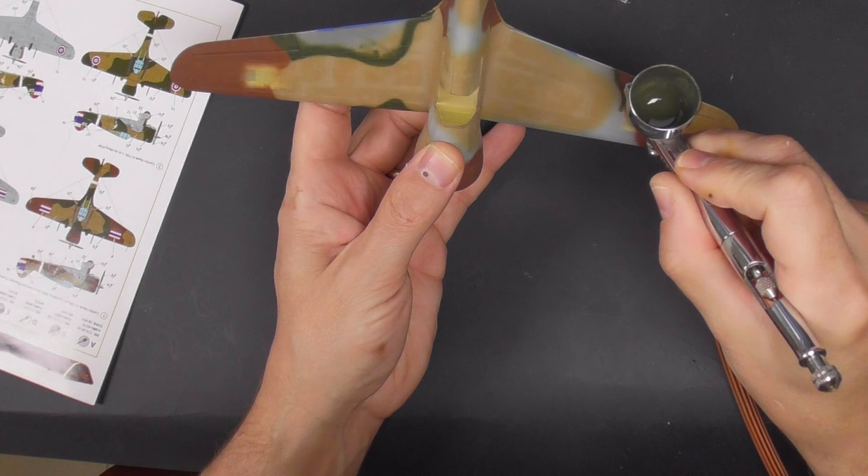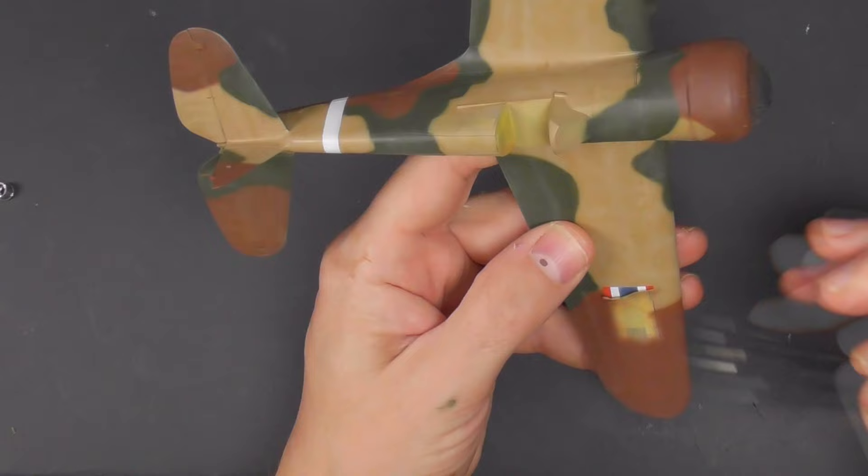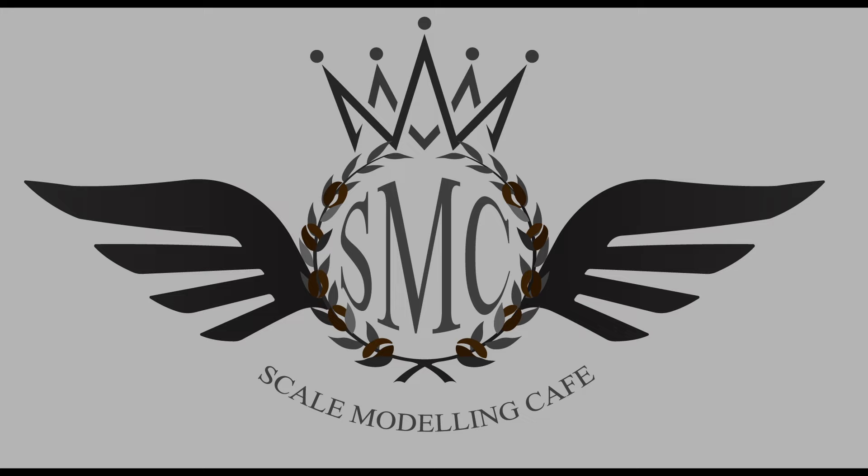In the next part it's on to the fun stuff, which is the painting. So it's a tricky camouflage actually, all done freehand. I did my usual oil dot weathering, and there's a bit of a reveal of the paint masks—it's all painted. That's what it'll end up looking like. So join me on the next episode. Thanks very much, cheers, bye bye.